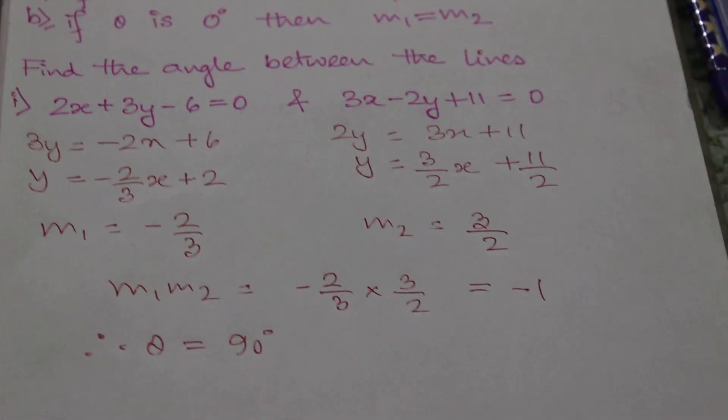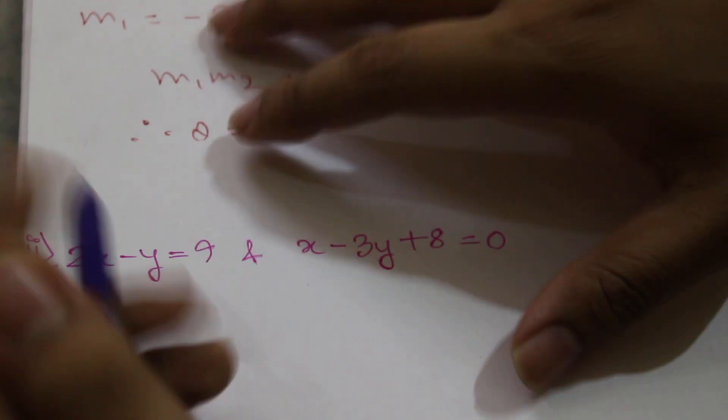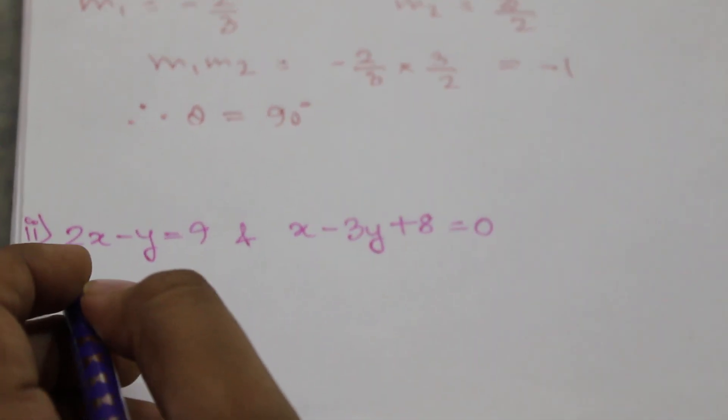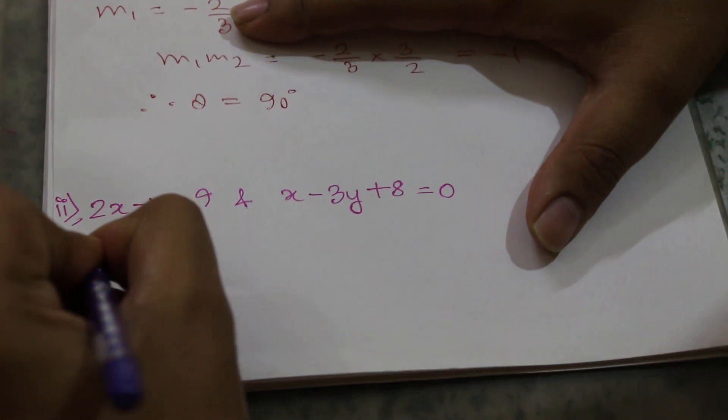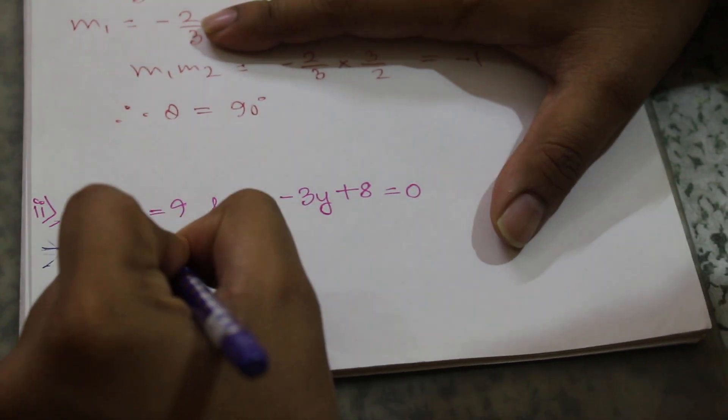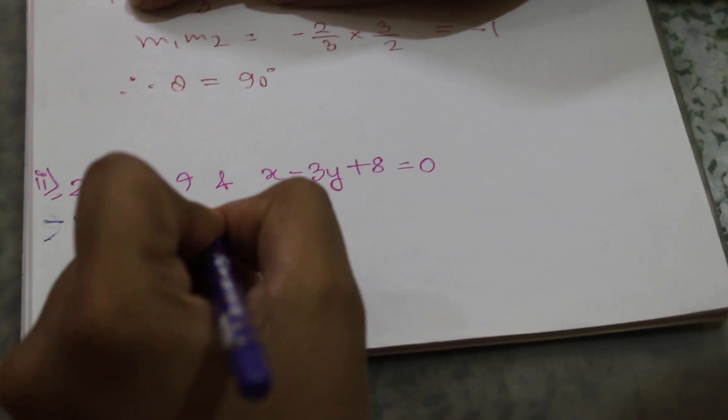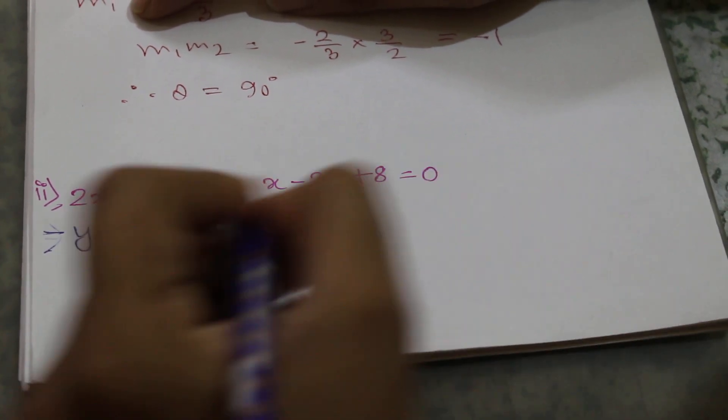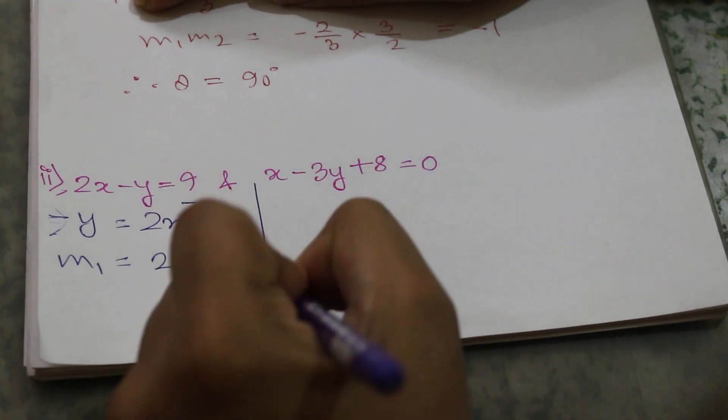Next, we will come to this example. The equations are 2x - 9y = 9 and x - 3y + 8 = 0. Converting to slope form, we find m1 = 2 for the first line.